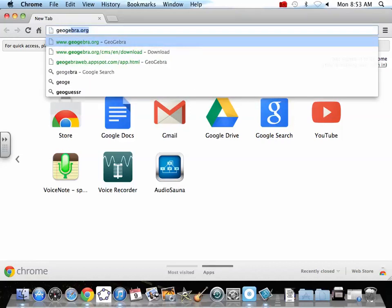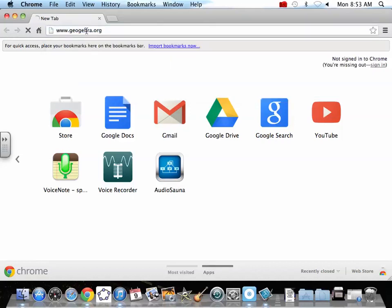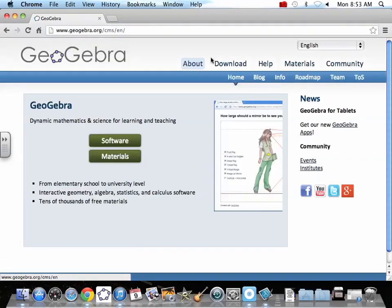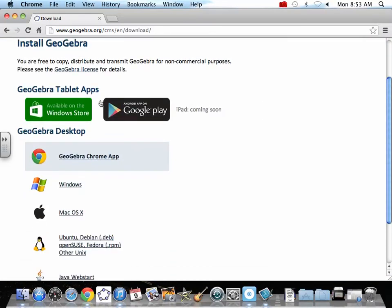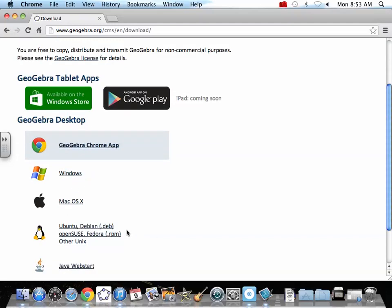Go to geogebra.org and go to the download link. As you notice, they have a tablet app on the Android, they're coming up with an iPad app soon. You can do it as a Chrome app or you can install it on Windows, Mac, or Linux.